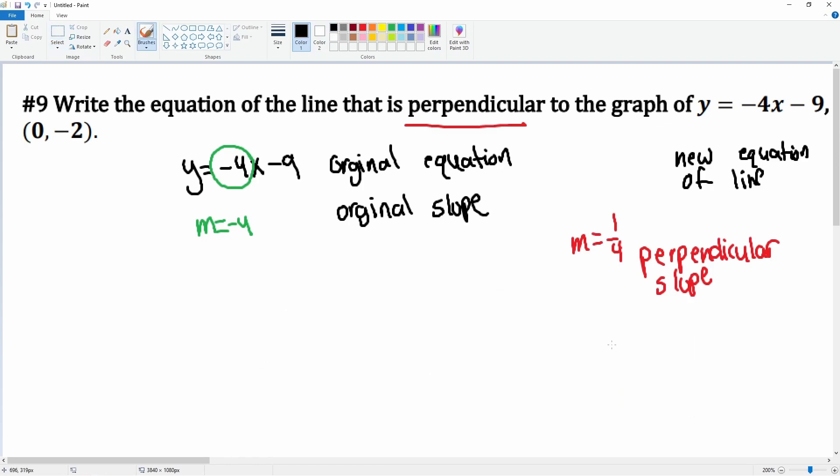Now we need to find the y-intercept. The y-intercept is just this point of 0, negative 2. We can just write that with the b value of negative 2.